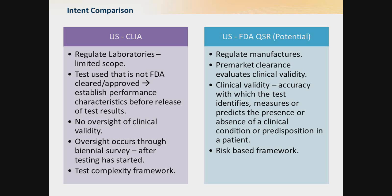There is a difference in the inspection point: CLIA laboratories produce tests that are only inspected through annual reviews and general assessments, whereas the FDA has a pre-market focus. The FDA focuses on clinical validity — the accuracy to which the test identifies, measures, or predicts the presence or absence of a clinical condition or predisposition in a patient — which is not within the current CLIA framework.